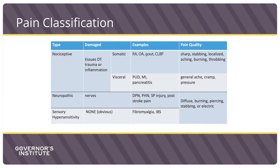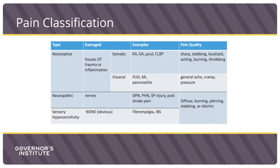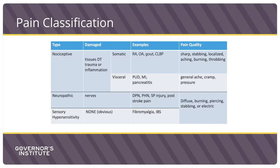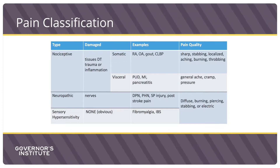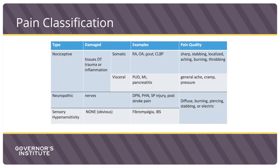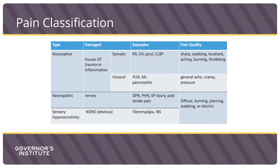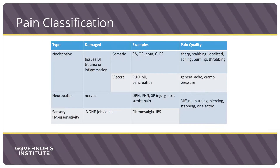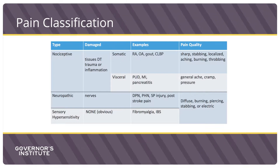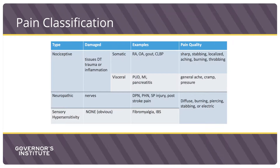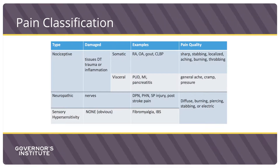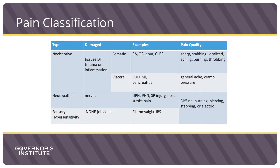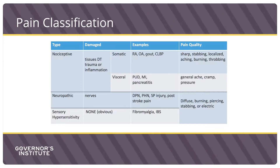Visceral, or organ pain, examples include peptic ulcer disease, myocardial infarction, or pancreatitis, and is described as a generalized ache, cramp, or pressure. Neuropathic pain is nerve pain due to damage of peripheral or central nerves. Examples include diabetic peripheral neuropathy, post-herpetic neuralgia, spinal cord injury, post-stroke pain, or phantom limb pain.